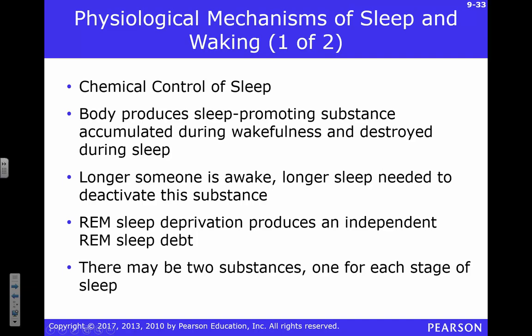Let's talk about how we control sleep — the mechanisms of sleep and waking. While you are awake, you are constantly producing a substance that promotes sleep. As you build up enough of that substance, it's going to overwhelm the brain mechanisms keeping you awake and make you go to sleep. While you're asleep, you'll destroy that substance. The longer you're awake, the more you produce, and the longer you need to sleep to destroy it.